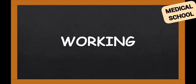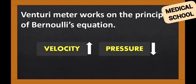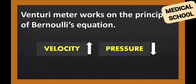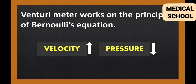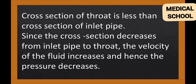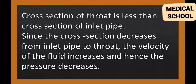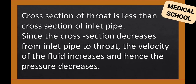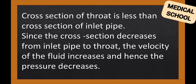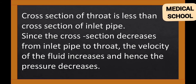Working: The Venturi Meter works on the principle of Bernoulli's equation — that is, when velocity increases, pressure decreases. The cross-section of the throat is less than the cross-section of the inlet pipe. Since the cross-section decreases from the inlet pipe to the throat, the velocity of the fluid increases and hence the pressure decreases.